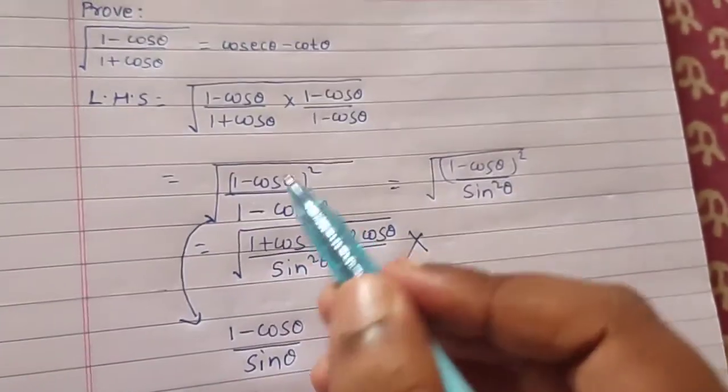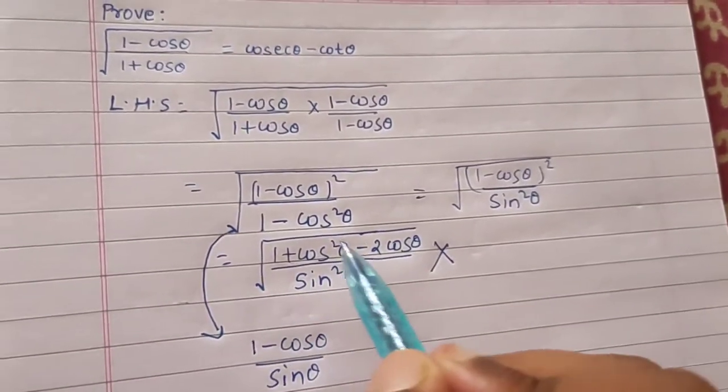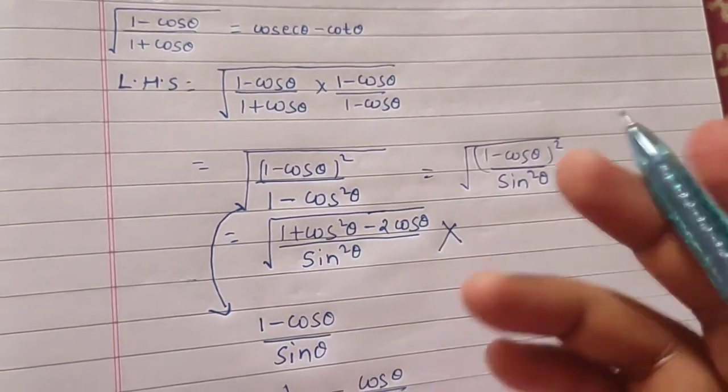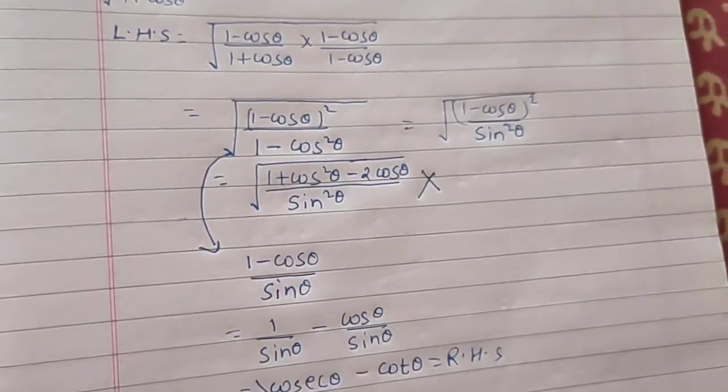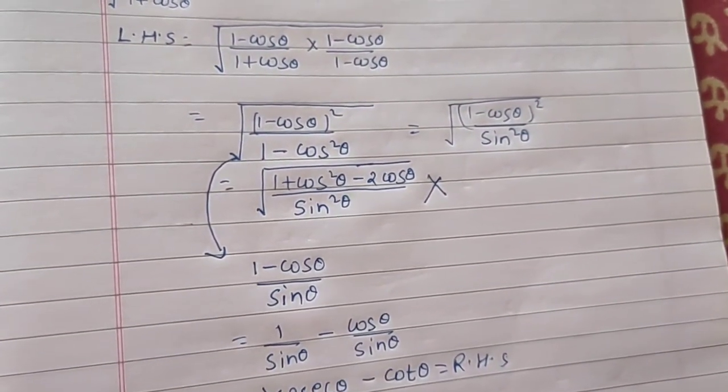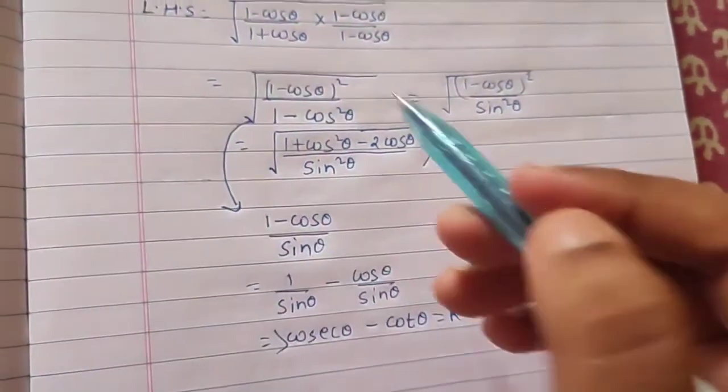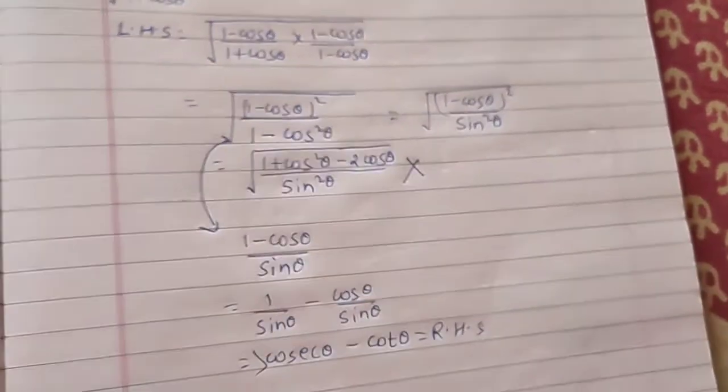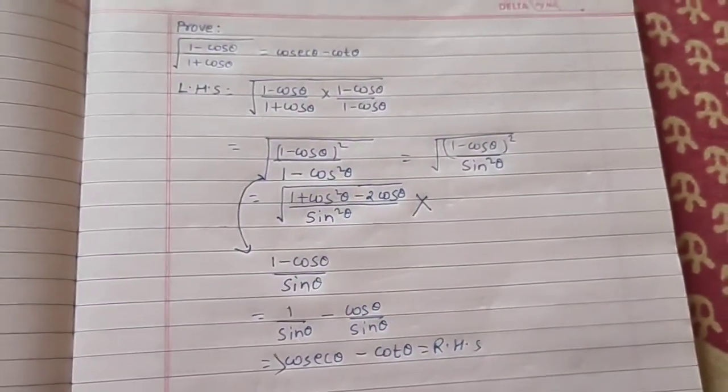This was important because sometimes when we open the square bracket it becomes a bit complex. You can solve this easily if you directly bring the 1 minus cos theta out.